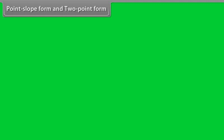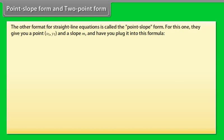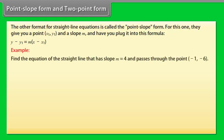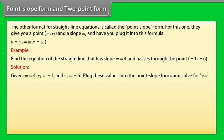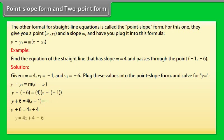Point-slope form and two-point form: The point-slope form gives you a point (X1, Y1) and a slope M and you plug them into the formula: Y minus Y1 equals M times (X minus X1). Example: Find the equation of the straight line that has slope M equals 4 and passes through the point (minus 1, minus 6). Solution: Given M equals 4, X1 equals minus 1, Y1 equals minus 6. Substituting into the point-slope form and solving for Y, we get Y equals 4X minus 2, which is the required equation.